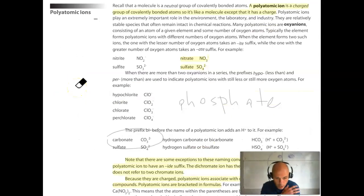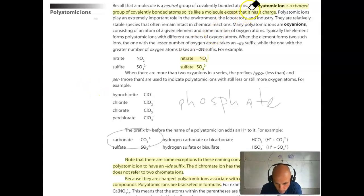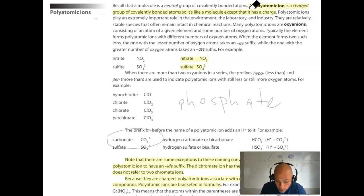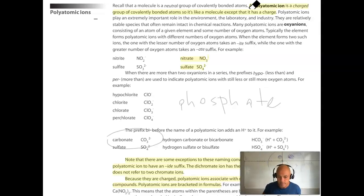Now let's talk a bit more about polyatomic ions. The negative ion in an ionic compound can either be a nonmetal ion (called a monatomic anion), or it can be a group of nonmetals that are covalently bonded together that form a complex ion. Polyatomic ions can be made of two or more nonmetal atoms that are covalently bonded together but collectively have a charge.